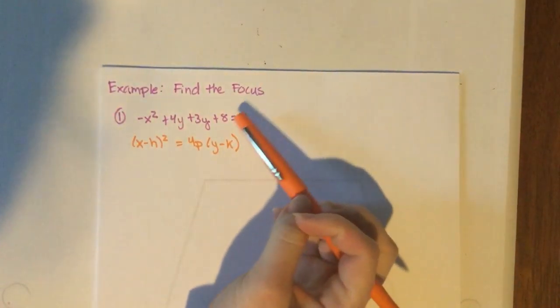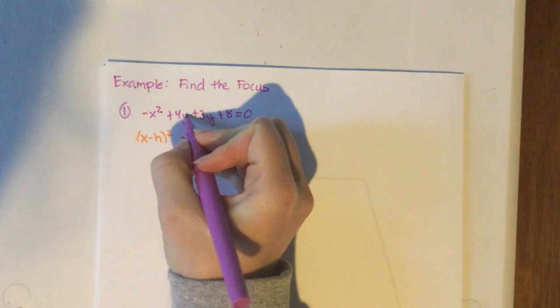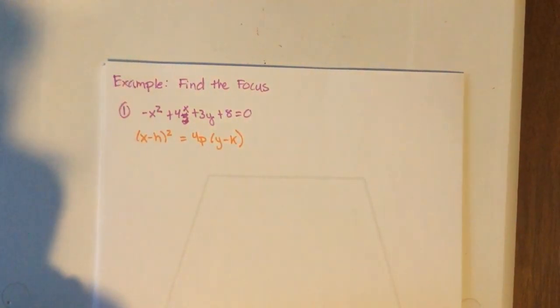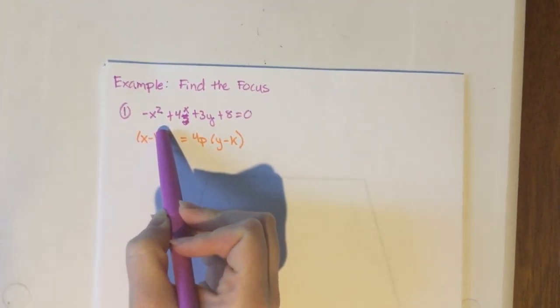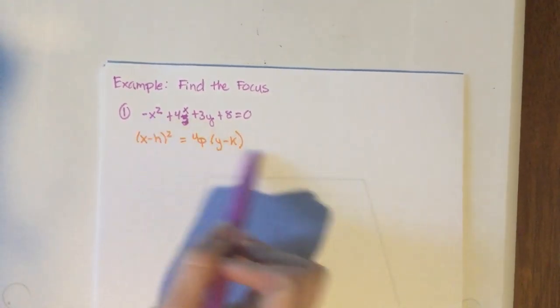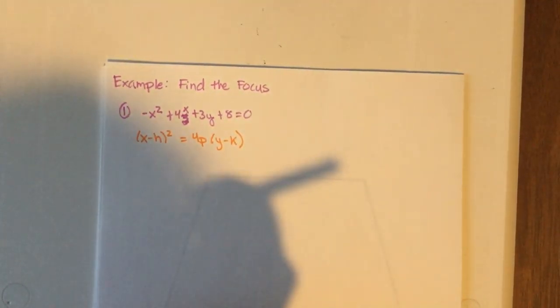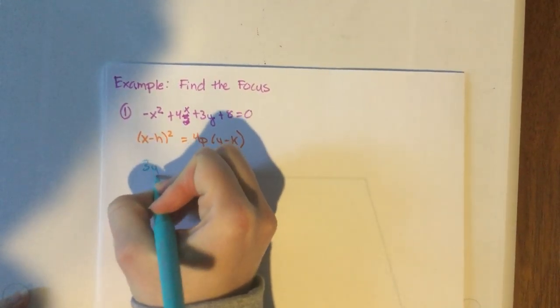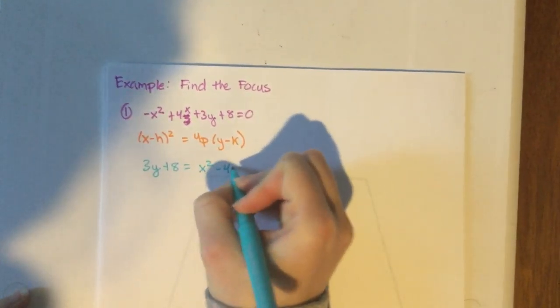So what I want to do, I want to get all the x's on the same side. I wrote that problem wrong, that should be 4x. So I want to get all the x's on the same side and all the y and the number on the same side. I know I typically have x squared on the left, however I have a negative here, so I'm just going to add it over to the right so I don't have to deal with negatives anymore, and it will make my life a lot easier. So what we're going to start with is, I'm moving all the x's over, so I'm left with 3y plus 8 equals x squared minus 4x.